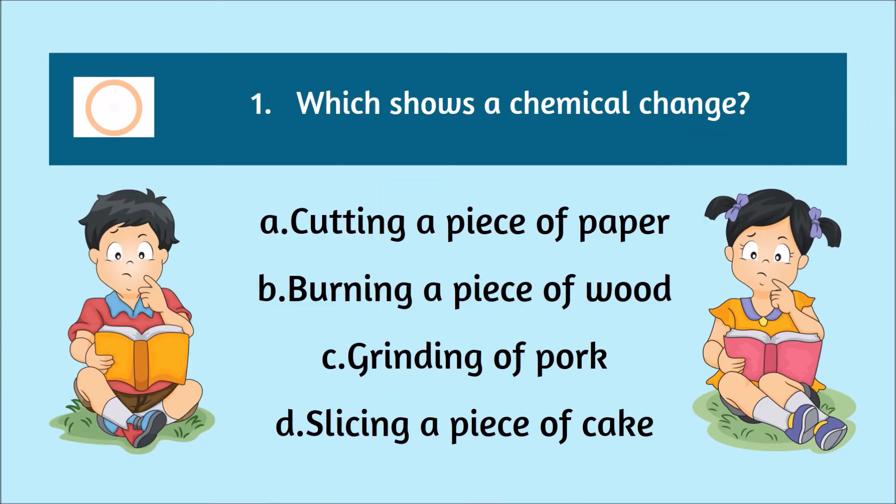Number 1. Which shows a chemical change? A. Cutting a piece of paper. B. Burning a piece of wood. C. Grinding of pork. D. Slicing a piece of cake.